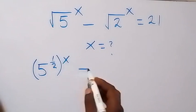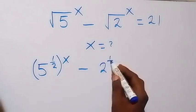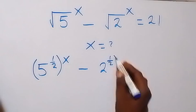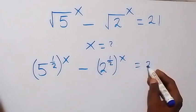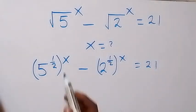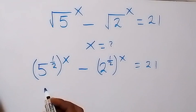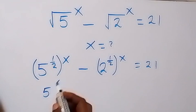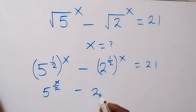Minus, also 2 raised to power half, then raised to power x, equals to 21. And from here, since this power multiplies, this becomes 5 raised to power x over 2, then minus here we also have 2 raised to power x over 2.